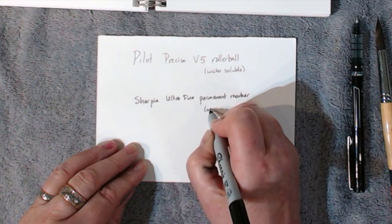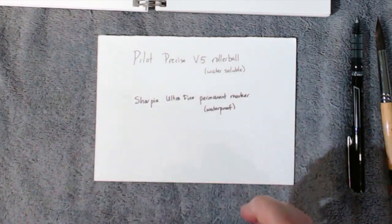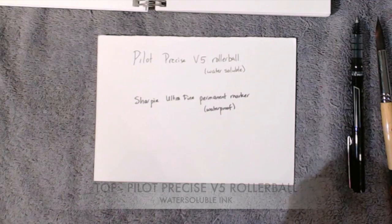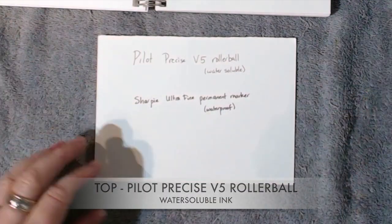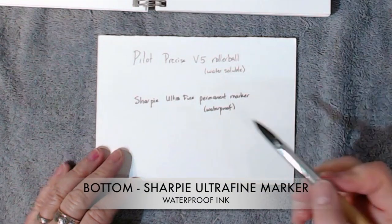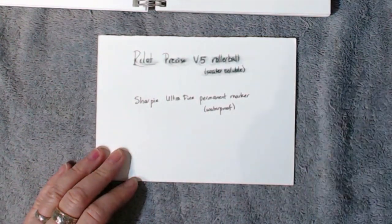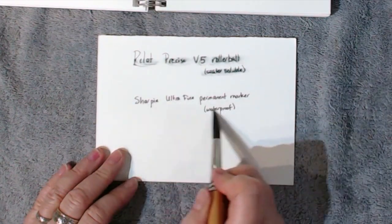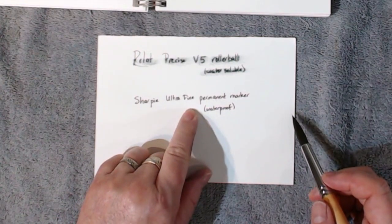To give you an idea of the difference, I've written with the pen that we used in the previous video on the top line and the Sharpie marker on the bottom line. Now I'm just going to take my brush with a little water and show you the difference. In the top line you see the ink moves, and in the bottom line when I get it wet it does not move. So this is what we want right here.